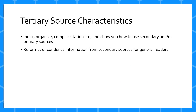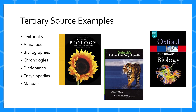Tertiary sources are further removed from the primary source and reformat or condense information from secondary sources for general readers, or index, organize, and compile citations and show you how to use secondary and/or primary sources. Common examples of tertiary sources are textbooks, almanacs, dictionaries, encyclopedias, and manuals.